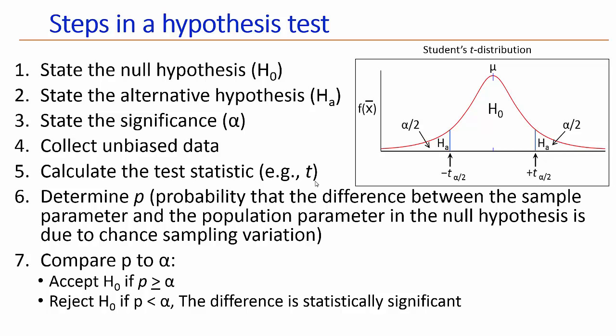p is the probability that the difference between the observed sample parameter and the population parameter stated in the null hypothesis is due solely to chance sampling variation. You then interpret your probability in step 7. You compare p to alpha. If p is larger than or equal to alpha, you accept the null hypothesis, which means the difference between your sample and a population parameter is due to random chance.